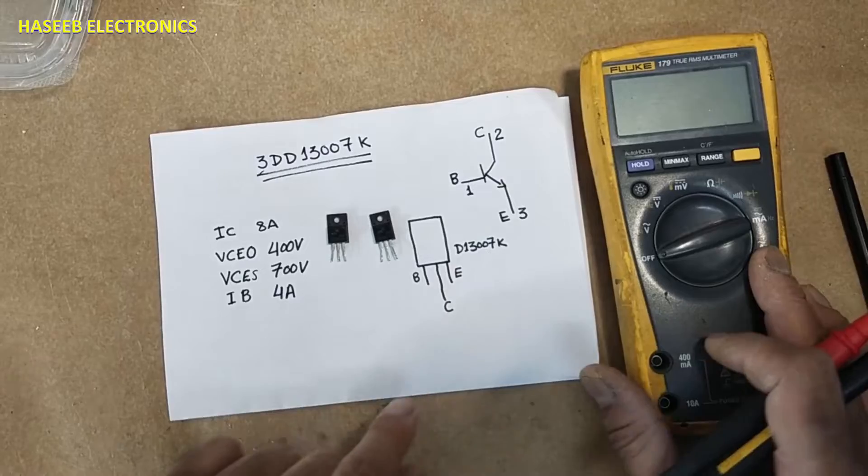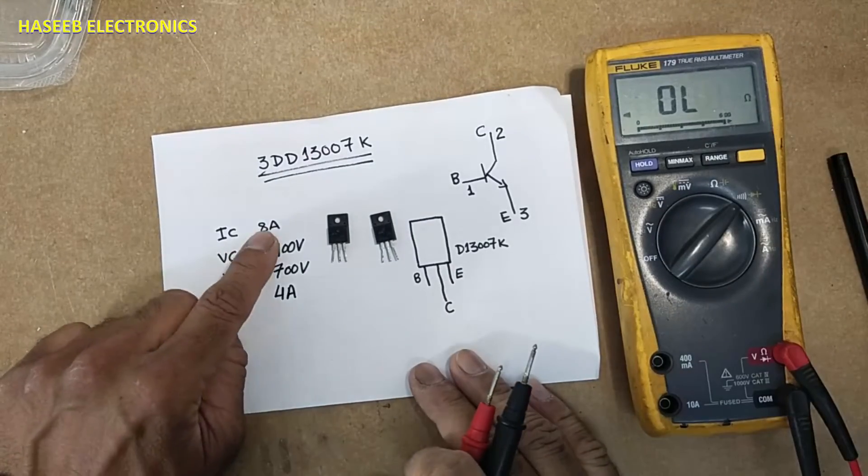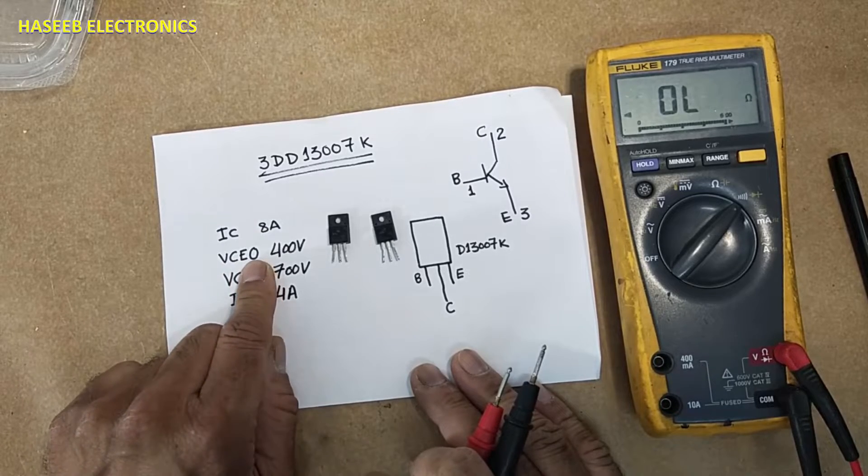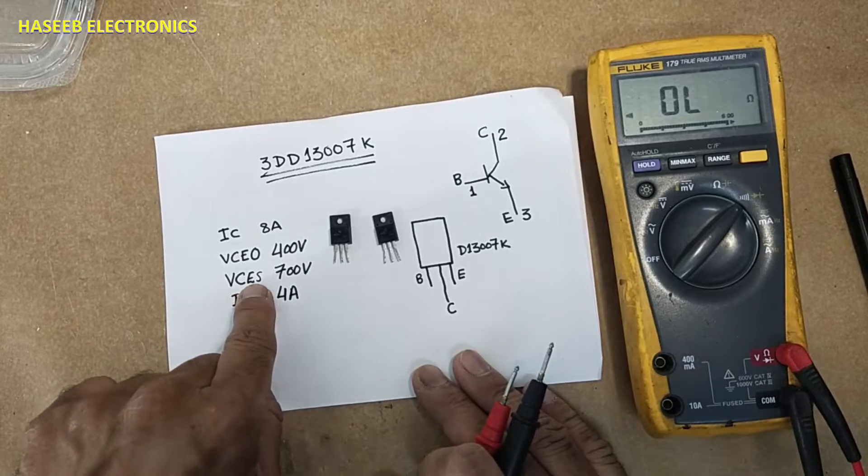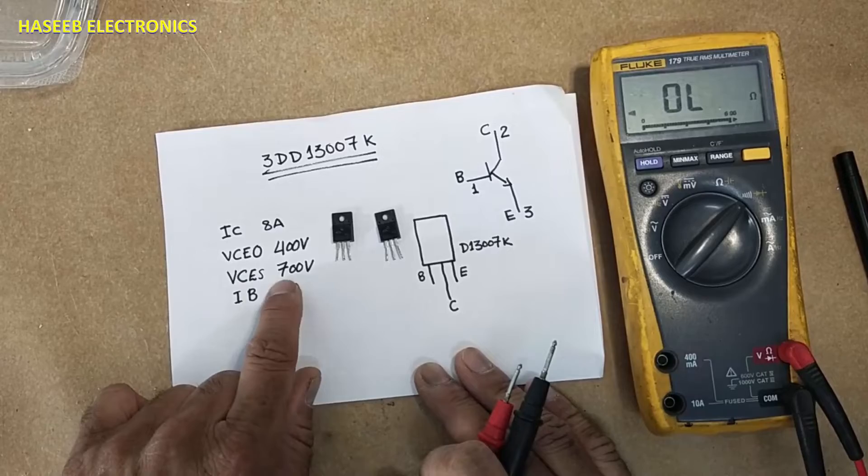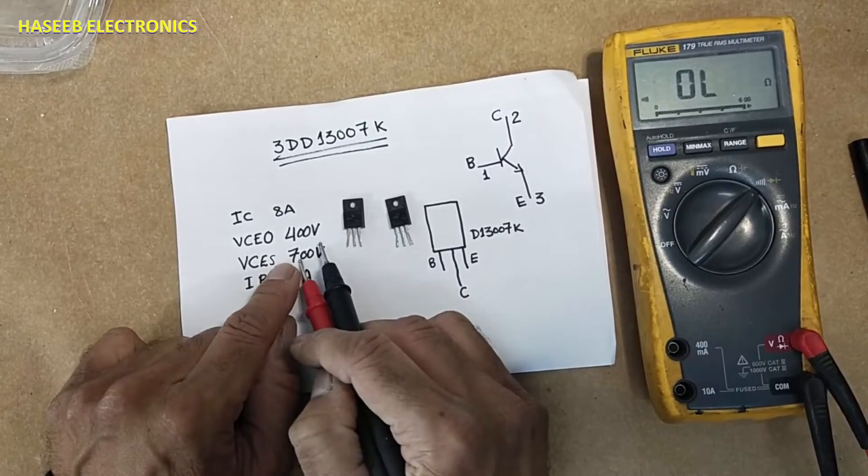Collector current 8 ampere, VCEO operational voltage working voltage 400 volt. VCES, these are short circuit voltage collector to emitter 700 volt. It is breakdown voltage at this voltage level transistor will damage.